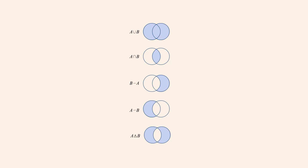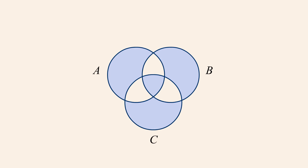We now have five different ways to combine two sets to create a new set. By using these operations to combine more than two sets, we can create interesting combinations. For example, when we first introduced Venn diagrams, we showed a diagram which looked like this. This diagram represents the symmetric difference of three intersecting sets.